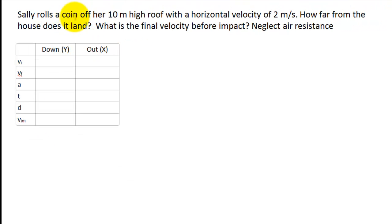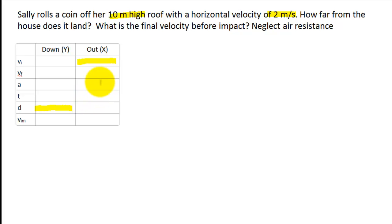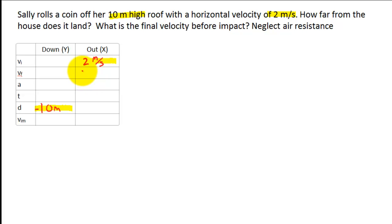The unbalanced force was gravity; beforehand it was balanced out by the normal force. Looking at the givens: we have a 10-meter-high roof, which we label as negative 10 meters for displacement. We note that it has a horizontal velocity of 2 meters per second — that's an initial velocity horizontally. And because there is no acceleration horizontally, that's also going to be my final velocity. I'm traveling horizontally with a constant velocity of 2 meters per second.